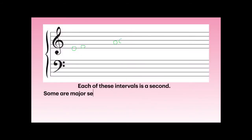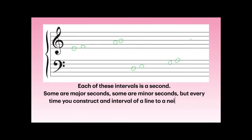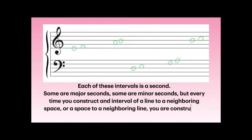Each of these intervals is a second. Some are major seconds, some are minor seconds, but every time you construct an interval of a line to a neighboring space or a space to a neighboring line, you are constructing some kind of second.